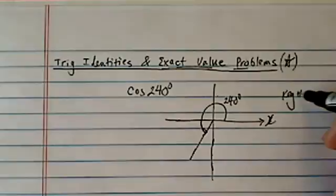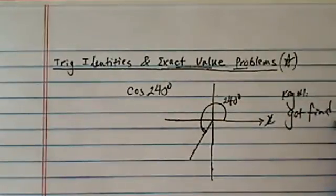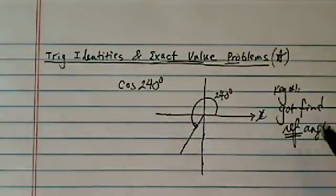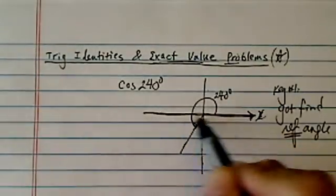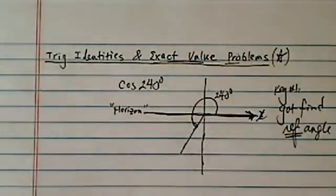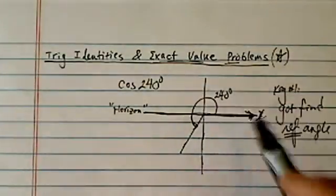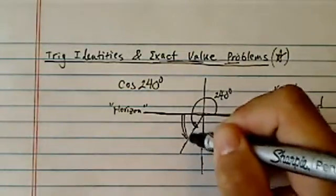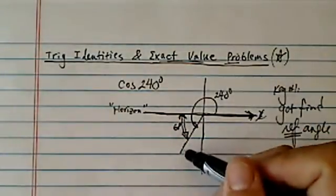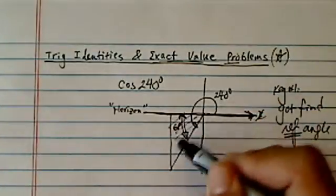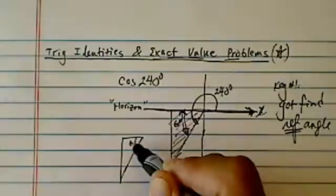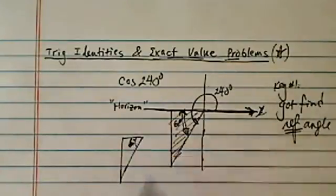Now here's key point number one. You've got to find reference angle. Reference angle is always, always referred to x-axis. It kind of makes sense if you think about it. How reference can you get other than horizon? So if you take this big large angle 240, the reference angle is the angle that's less than 90 degrees, which is much more pleasant to work with. And this little triangle is our reference triangle.